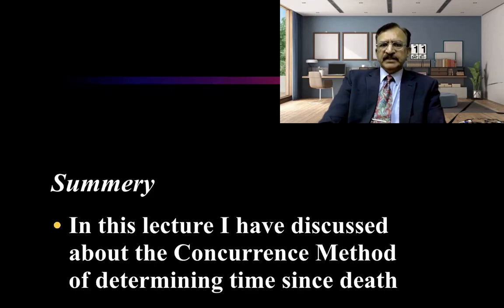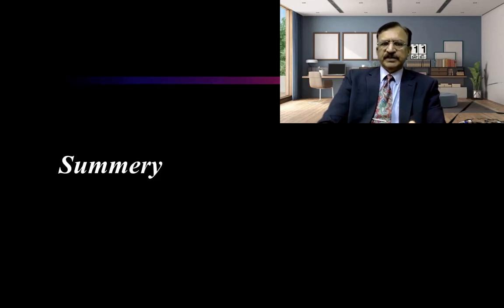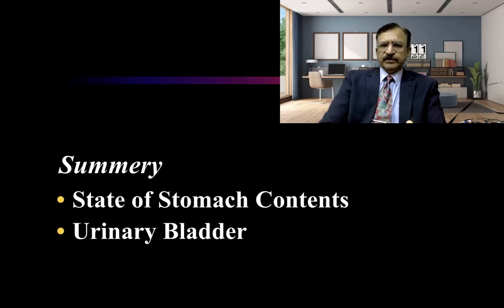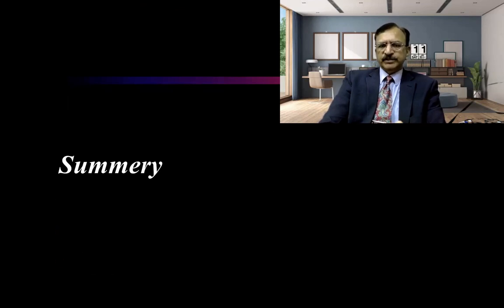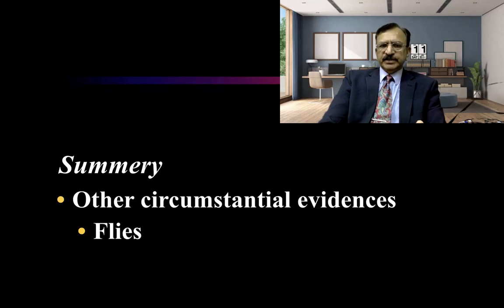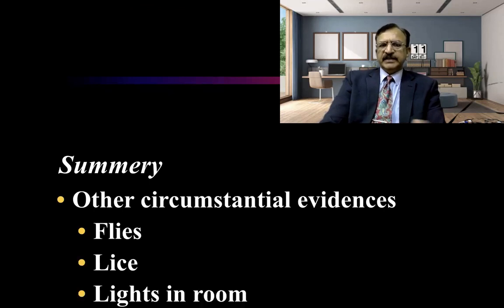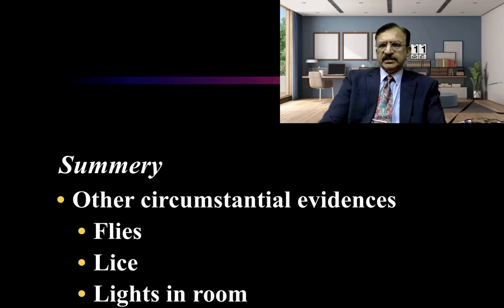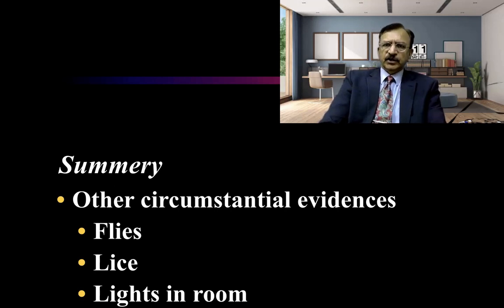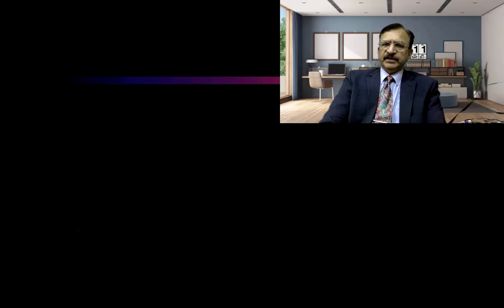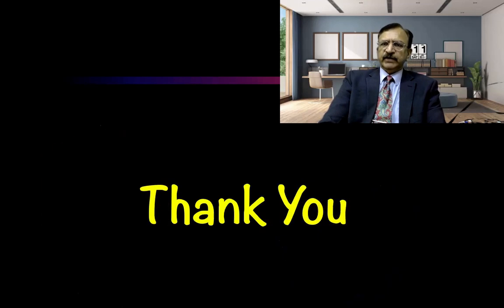In summary, we have discussed the circumstantial evidence in the concurrence method: the state of stomach contents, urinary bladder, bowel state, and other circumstantial evidence like flies, lice, and lights in the room. These are the circumstantial data found at the scene of crime, and the processes going on within the body or in the surroundings help us in determination of time since death. Thank you very much. Take care and Allah Hafiz.